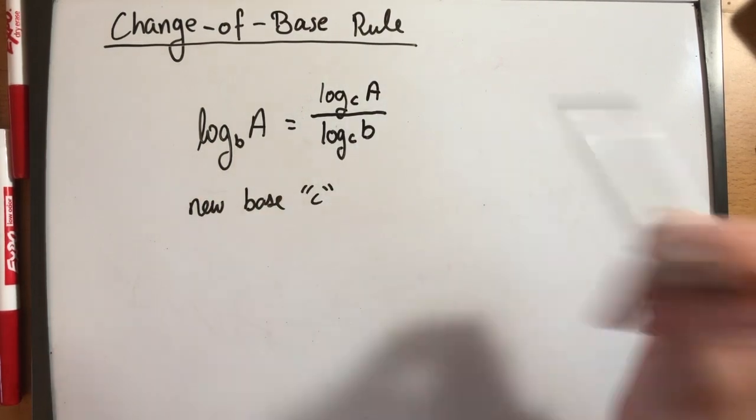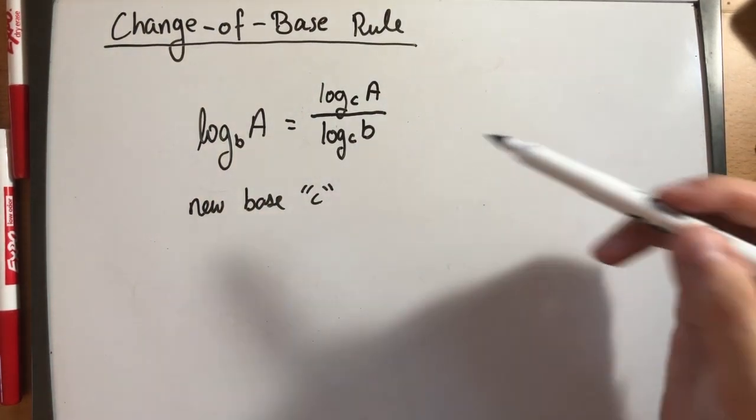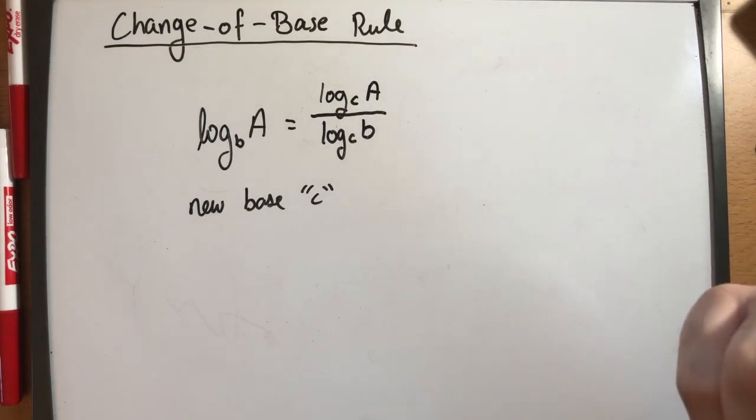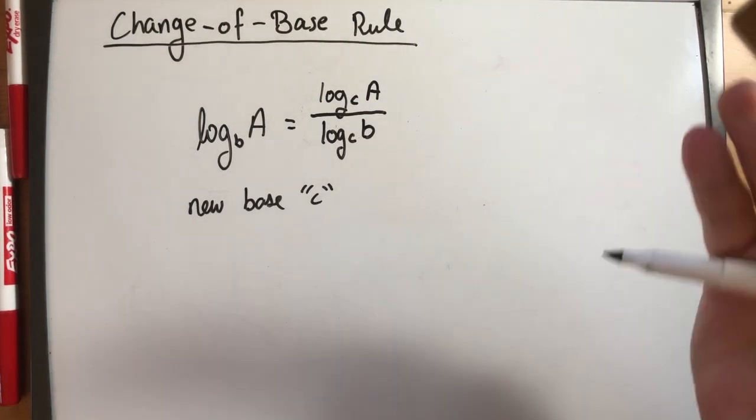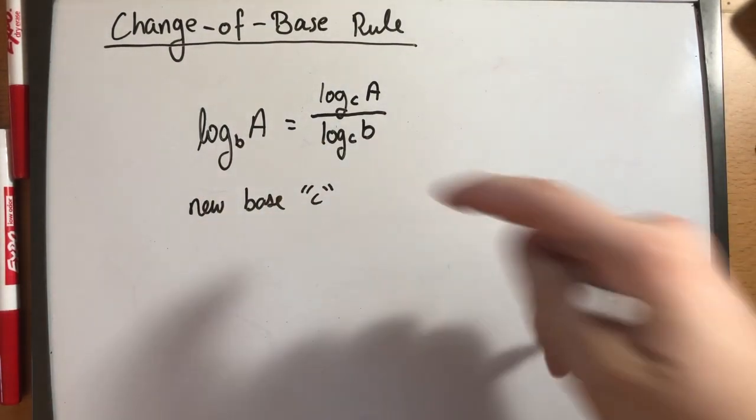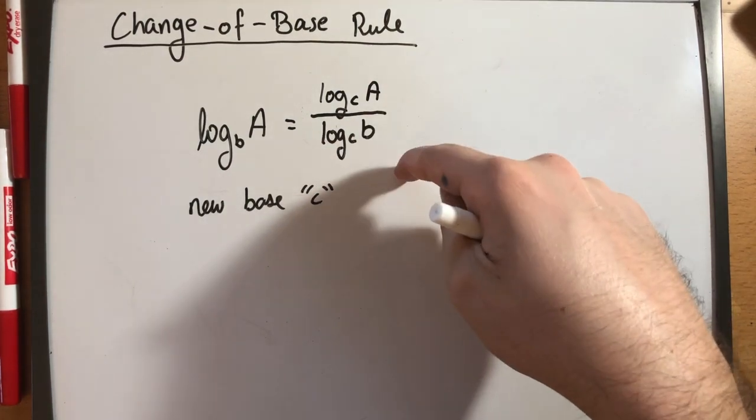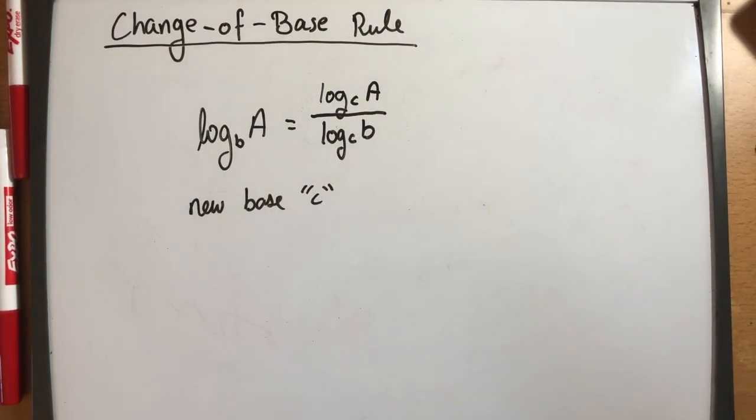These two have the same exact value but the difference is you are now working with a new base instead of working with the old base B. Yes you may be working with two logs but at least they are of the new base instead.